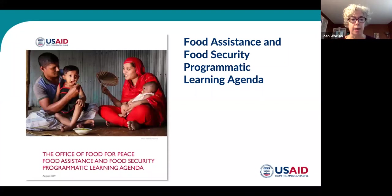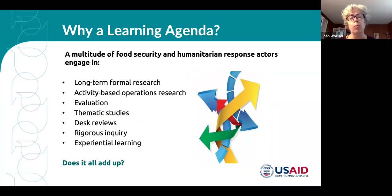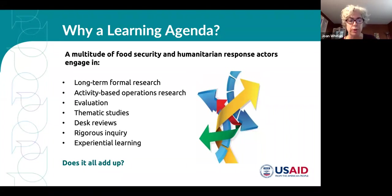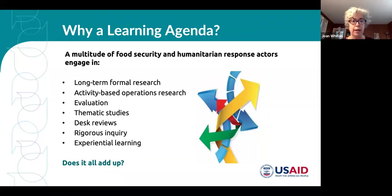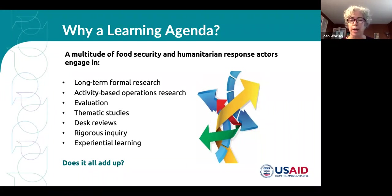I want to step back and talk through why a learning agenda is important. In a nutshell, we have learned that it is important to take explicit, intentional steps to understand what's working and what's not working, and what approaches will be most effective and efficient over the long term. There are a multitude of food security and humanitarian response actors—donor agencies, academic researchers, implementing partners, civil society organizations, national governments—all working to answer really fundamental questions. But how do we make sure it all adds up? That we are prioritizing and really answering questions that are going to move the needle?